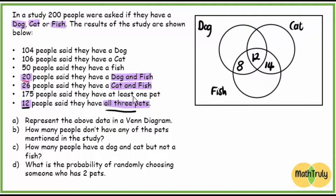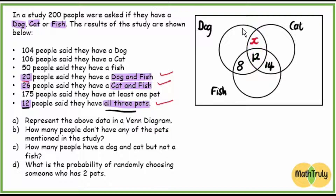A useful tip: once you've recorded information, you can cross it off. Now, working from the inside out — intersection of all three, then intersection of two — you'll notice the data doesn't tell us anything about people who have a dog and cat. Since that's the only missing intersection, we'll call it X. So dog and cat only equals X.